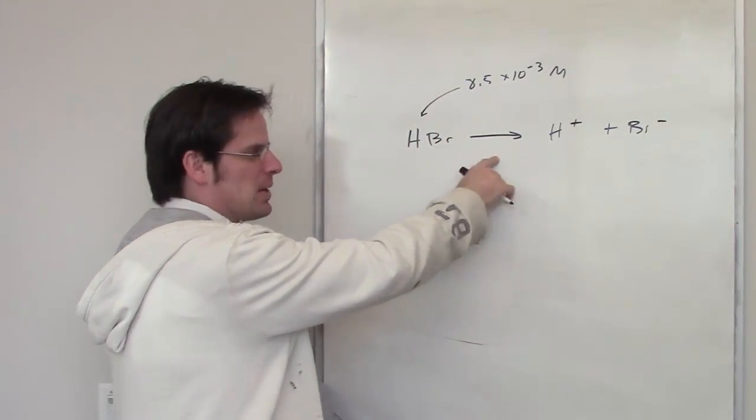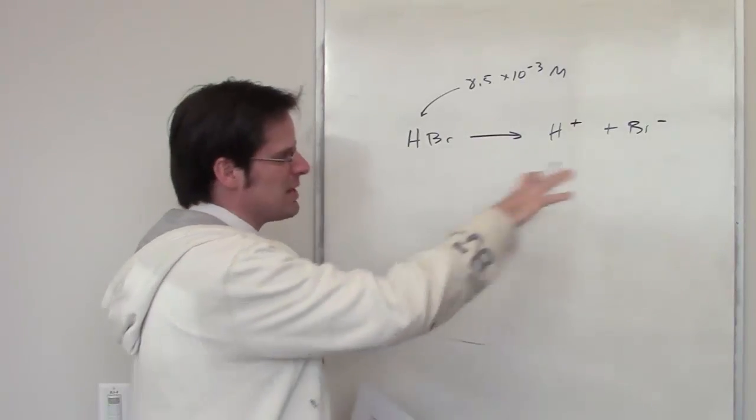Now, if this were a weak acid, we'd have an equilibrium arrow, but it's a strong acid, so it's pretty much virtually one-way.